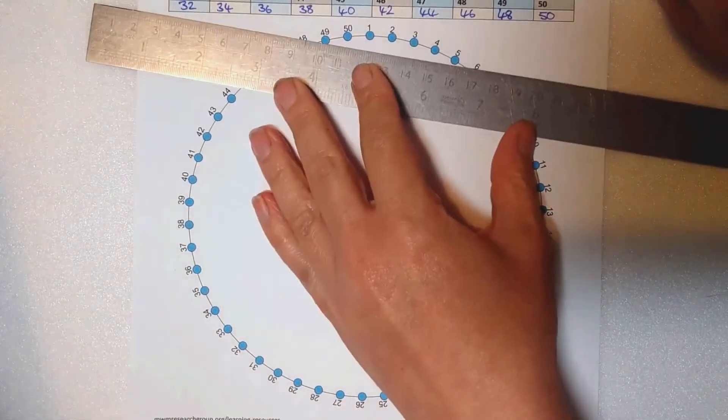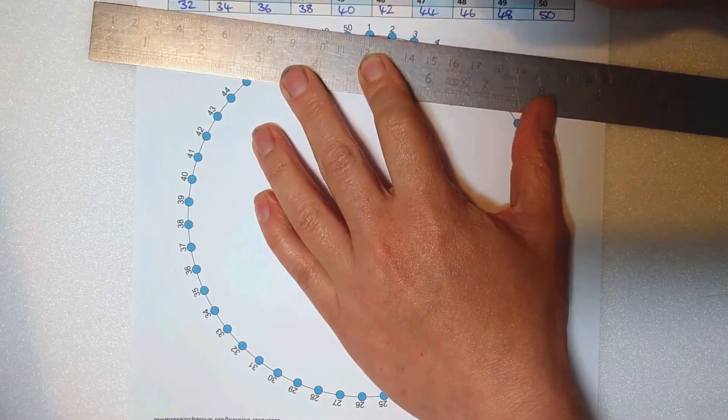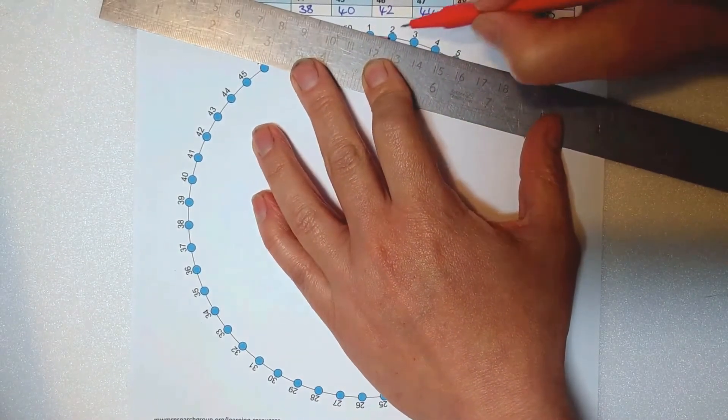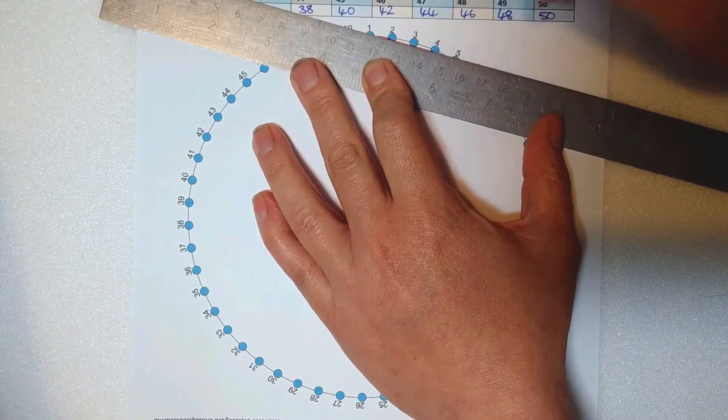Use a ruler to join the points according to your table. 1 to 2, 2 to 4, 3 to 6, 4 to 8 and so on.